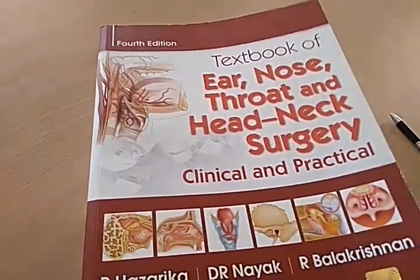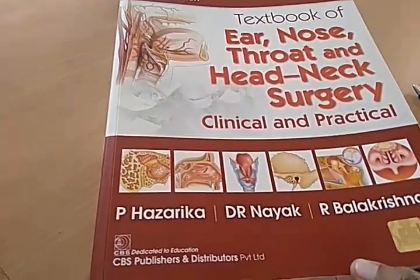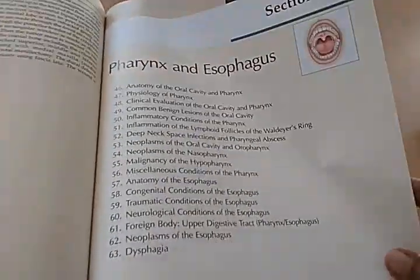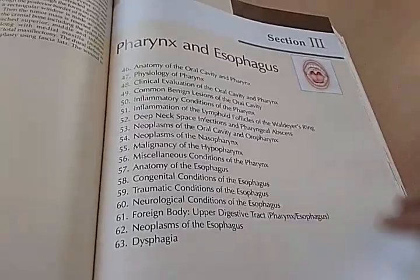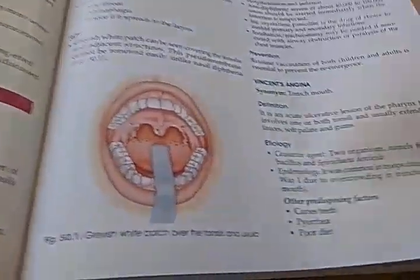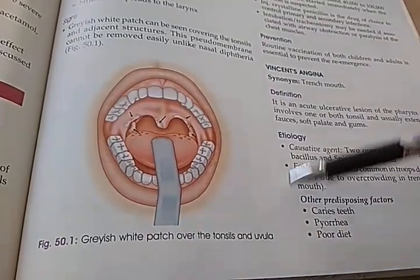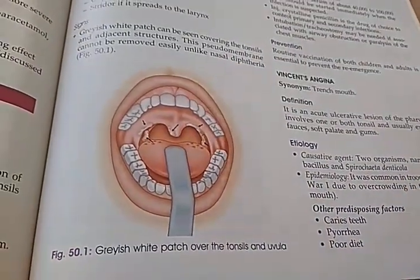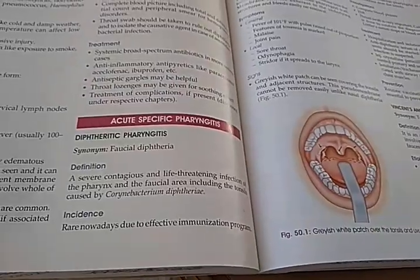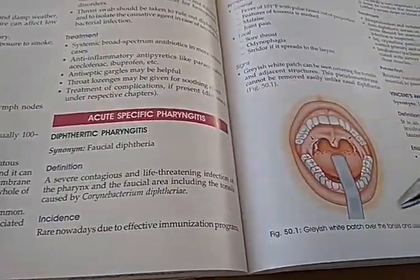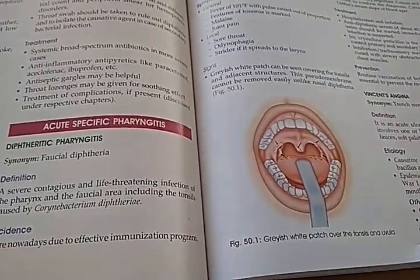So guys, we are now looking at pharynx and esophagus in this textbook of ear, nose, throat and head and neck surgery by Hazarika, Nayak, and Balakrishnan. Let's look at some interesting images. There is a grayish white patch over tonsils and uvula — a drawn image — they are discussing diphtheritic pharyngitis and the membrane formation.